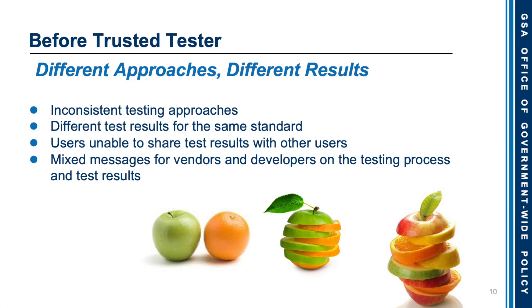Now we're going to talk a little bit about Trusted Tester. Before Trusted Tester, there were different approaches and different results. There were inconsistent testing approaches and different test results for the same standards. Users were unable to share test results with other users. There were mixed messages for vendors and developers on the testing process and test results. On the slide, we depict an apple and an orange, and those apples and oranges sliced and stacked together to show graphically this inconsistent testing approach and how it impacts various stakeholders.